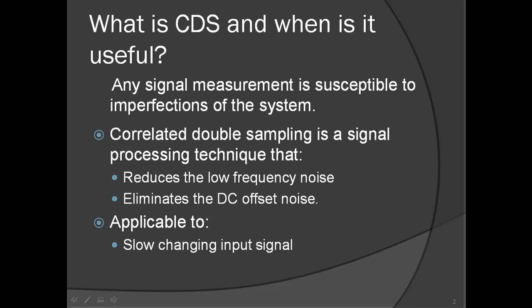Correlated double sampling is a signal processing technique that you can use to reduce the low frequency noise referred to as 1/f noise. This is added to the signal by the signal path, which can be amplifiers, buffers, ADCs, or others. The 1/f noise is inherent to any semiconductor device and cannot be eliminated — only the effect on the signal can be reduced.